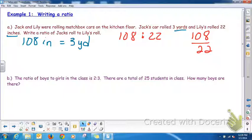So we can reduce this. These have a common factor of two. So this ratio of Jack's roll to Lily's roll would end up being 54 to 11 inches. For every 54 inches he rolled, hers rolled 11.